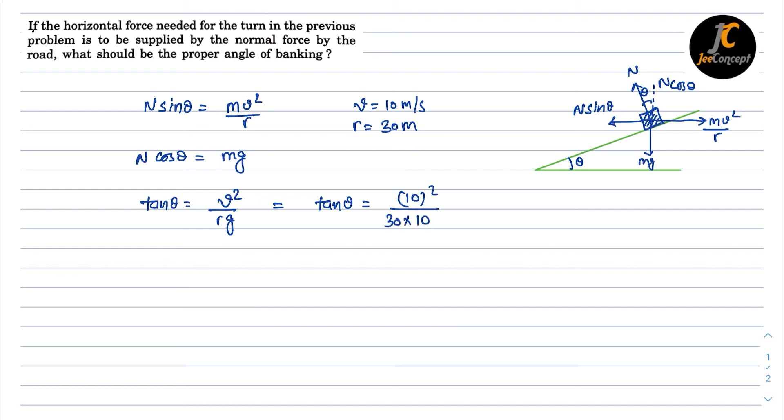This will become 100 upon 300, or 1 by 3. So the angle of banking will be theta equals tan inverse 1 by 3. This is the solution of this problem.